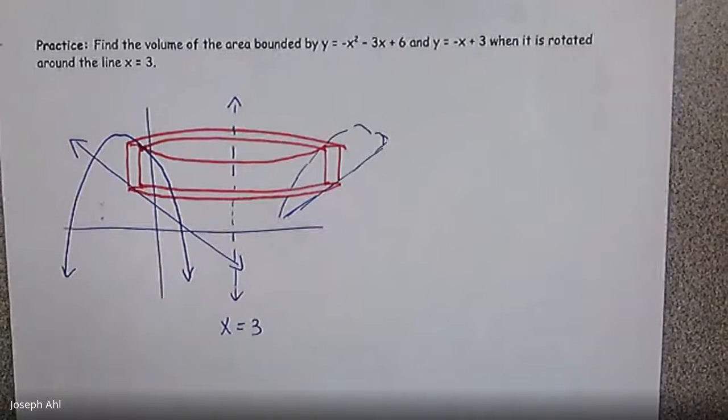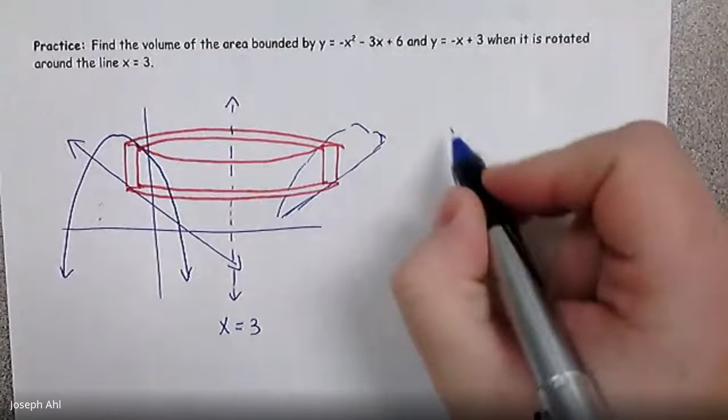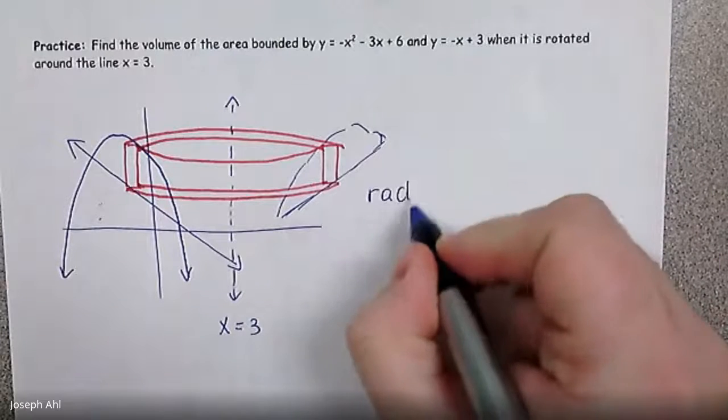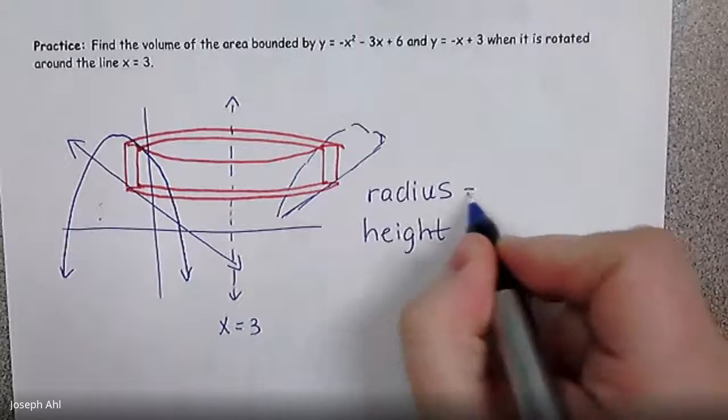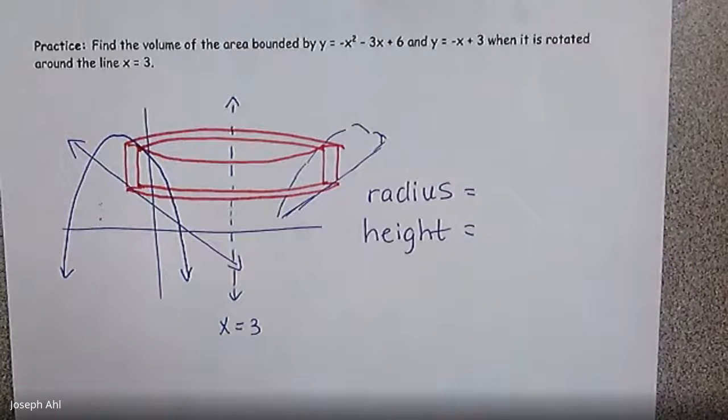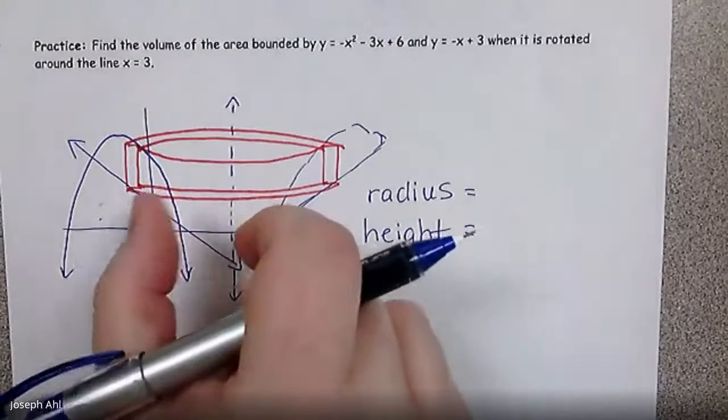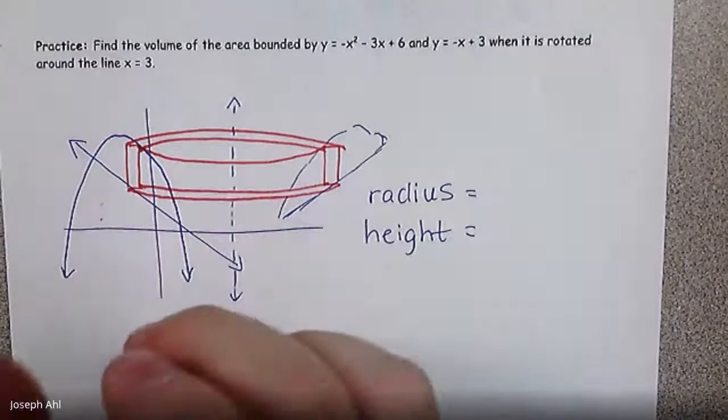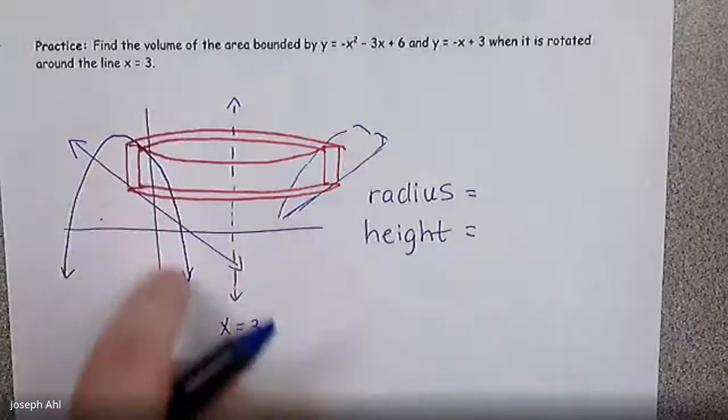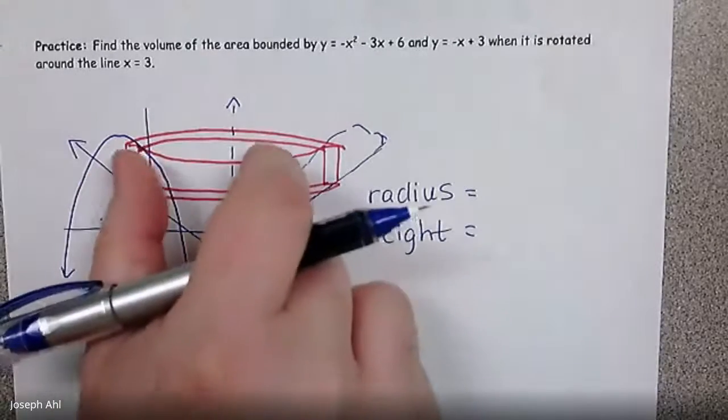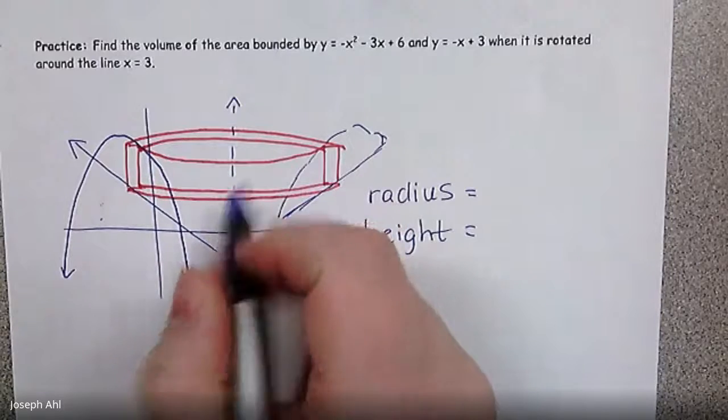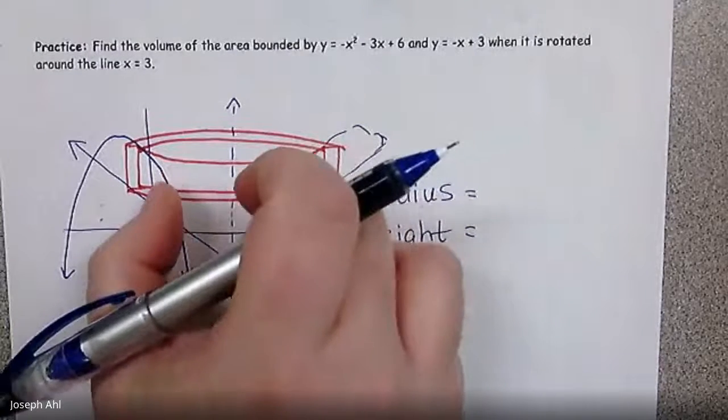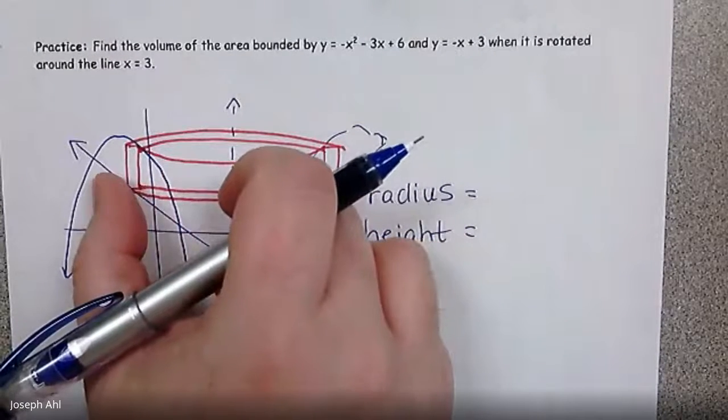So we have to decide when we're doing shells, what's the radius and what's the height, right? So the radius and the height. So the radius at any given point is usually x, but that's only if we're spinning it around the y-axis.